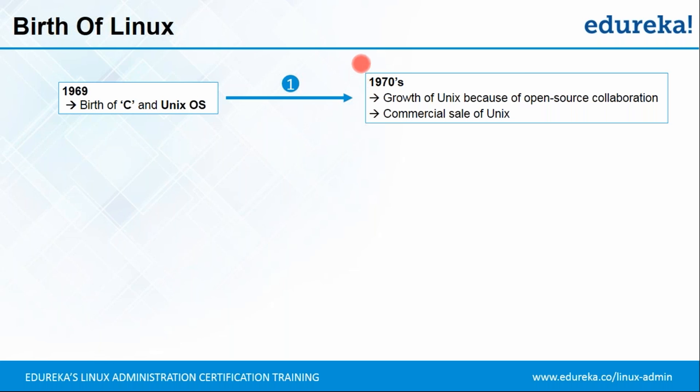Many scientists and developers collaborated together, wrote their own code and versions of Unix, and contributed to its development. Since AT&T was responsible for founding Unix, they gained a lot of benefit — they got help from others for developing the operating system, then made it a business by starting commercial sale of Unix. This did not go down well with many developers and scientists, because it was their effort that contributed to Unix's growth, yet AT&T was making money out of somebody else's work.